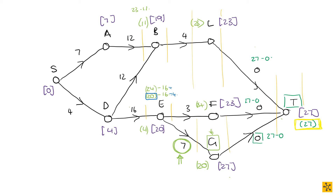Next up, we have D and A. D is going to be the slightly more complicated one because it has two arcs radiating out from it. We're going to look at the latest start times of both arcs radiating out of D. So we have 11 and we have 4. We select the smallest, which is 4, and then we subtract the weight of the edge radiating in towards D, which is 4, giving us zero. So the latest start time for D is zero. Then we look at A: 11 minus 7 gives you 4. So A's latest start time is 4.